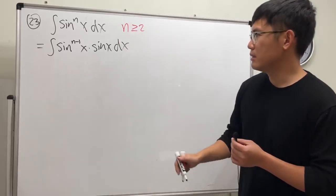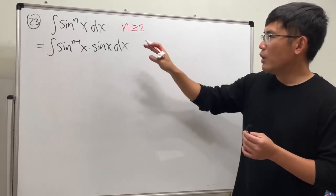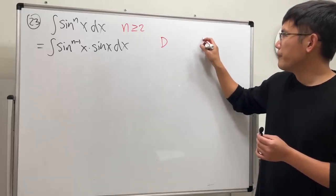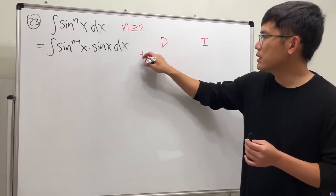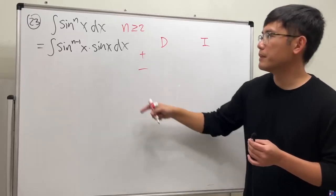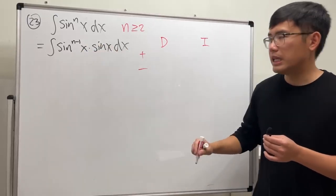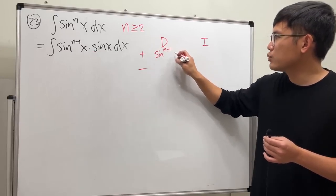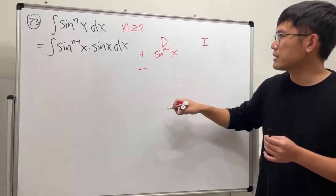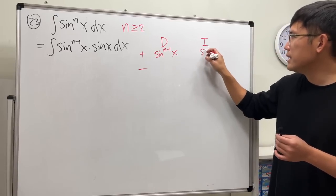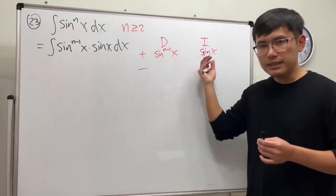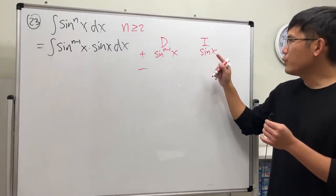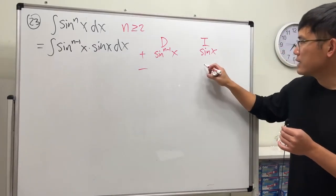Now why did I do that? Once we have this, we can do integration by parts — the DM method. I will be differentiating sine to the n minus one power of x, and integrating sine x. When we integrate sine x we get negative cosine.